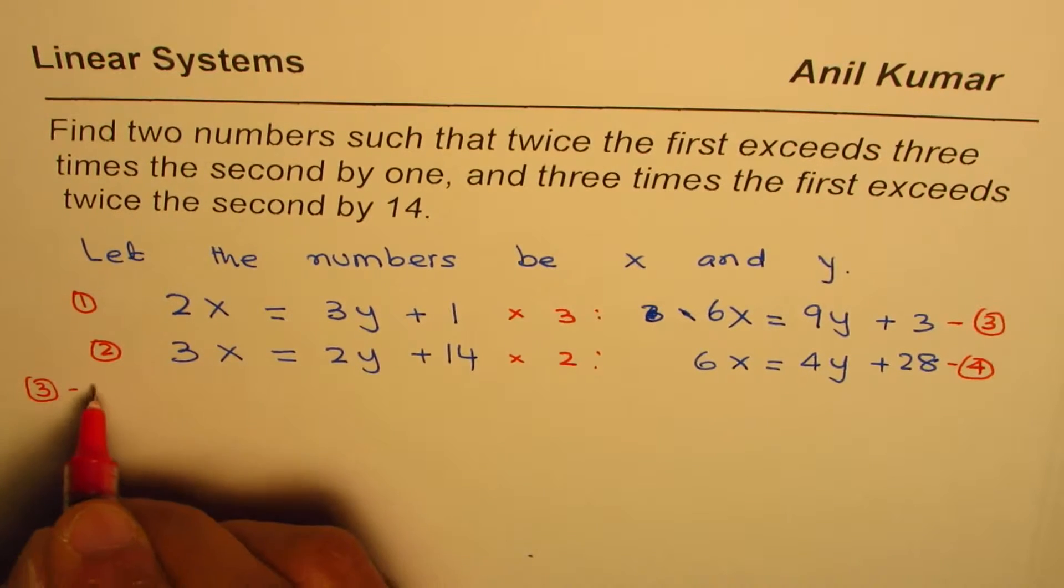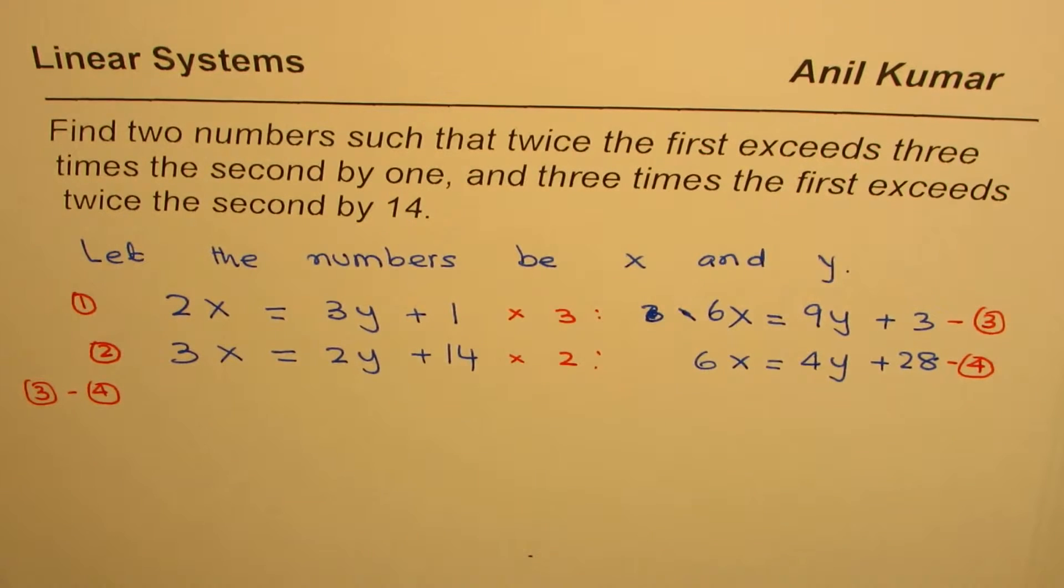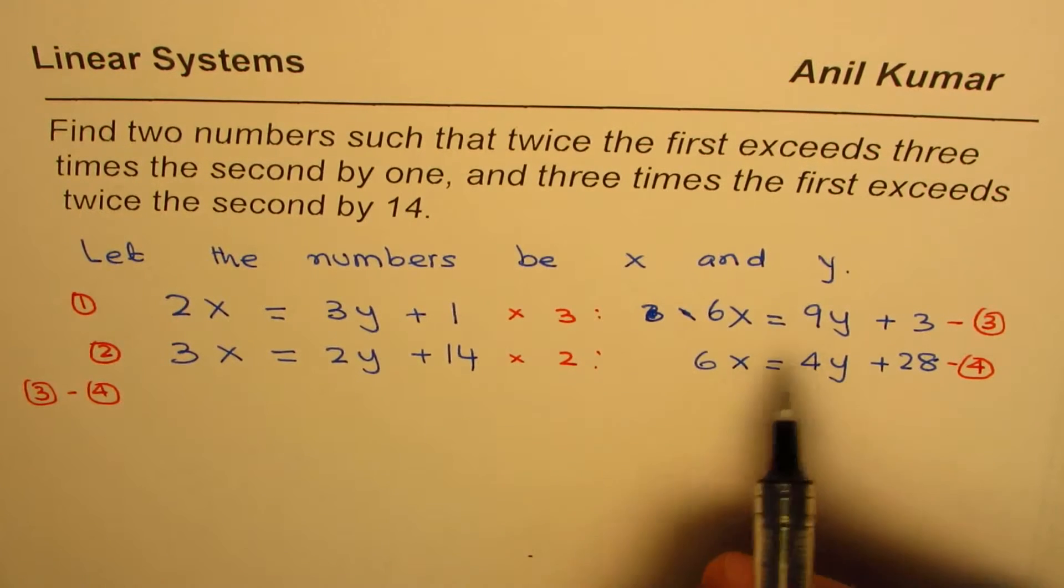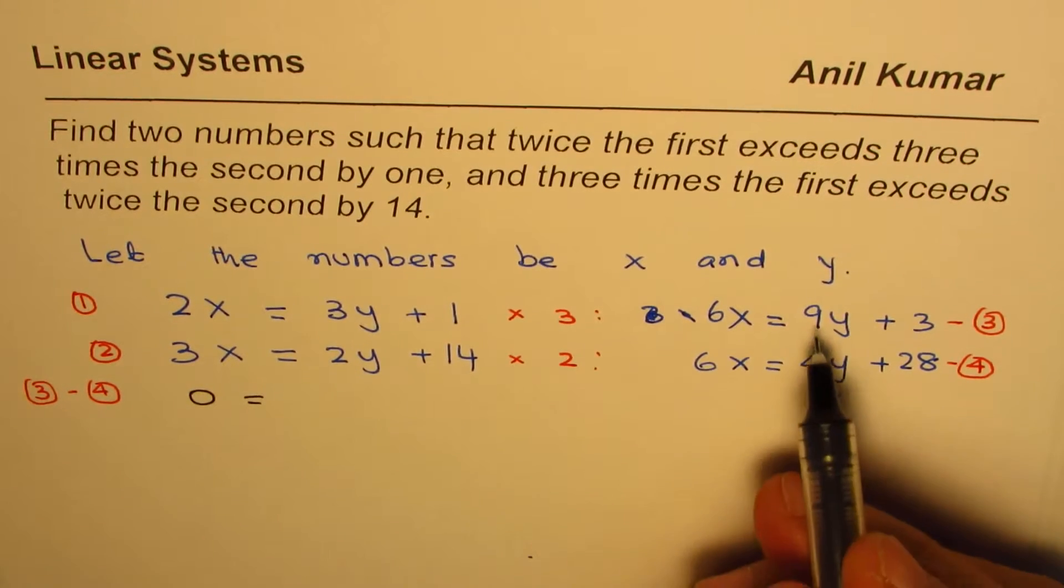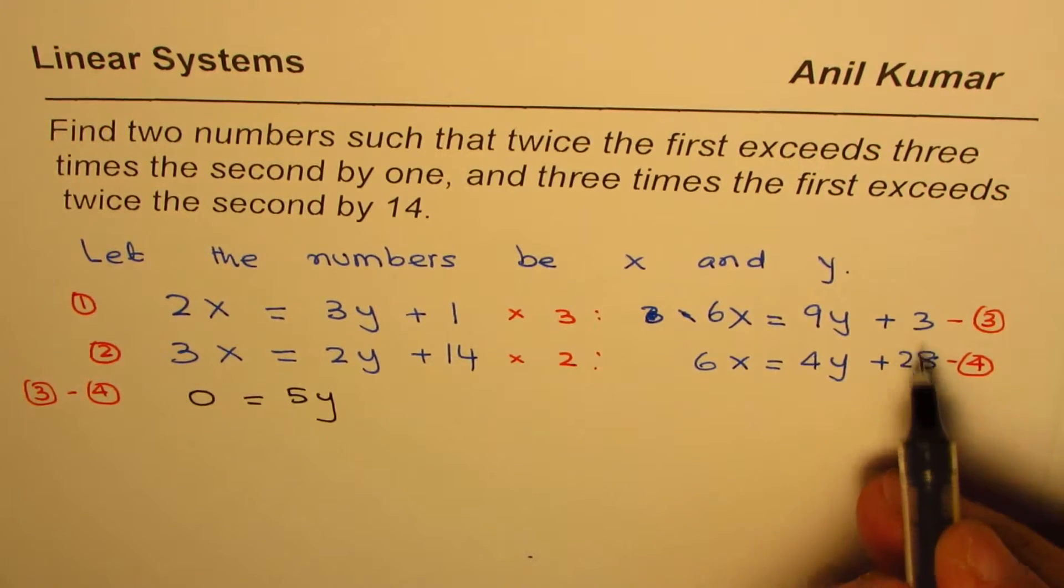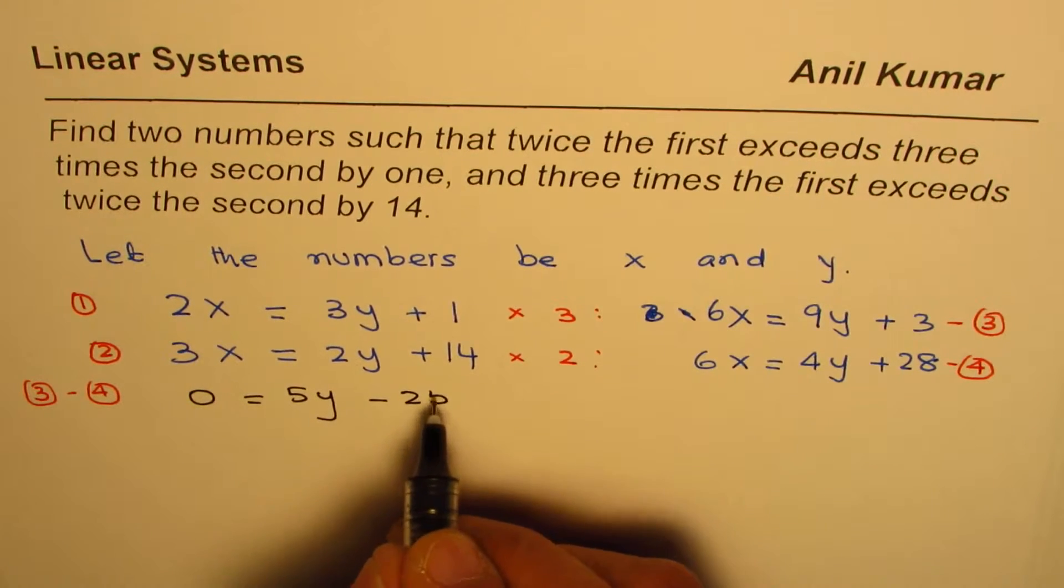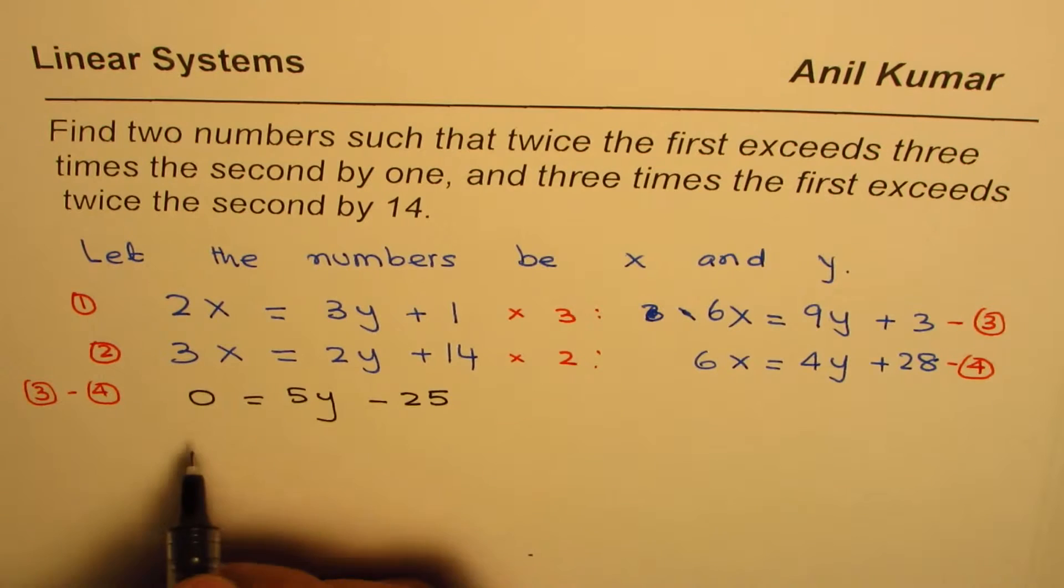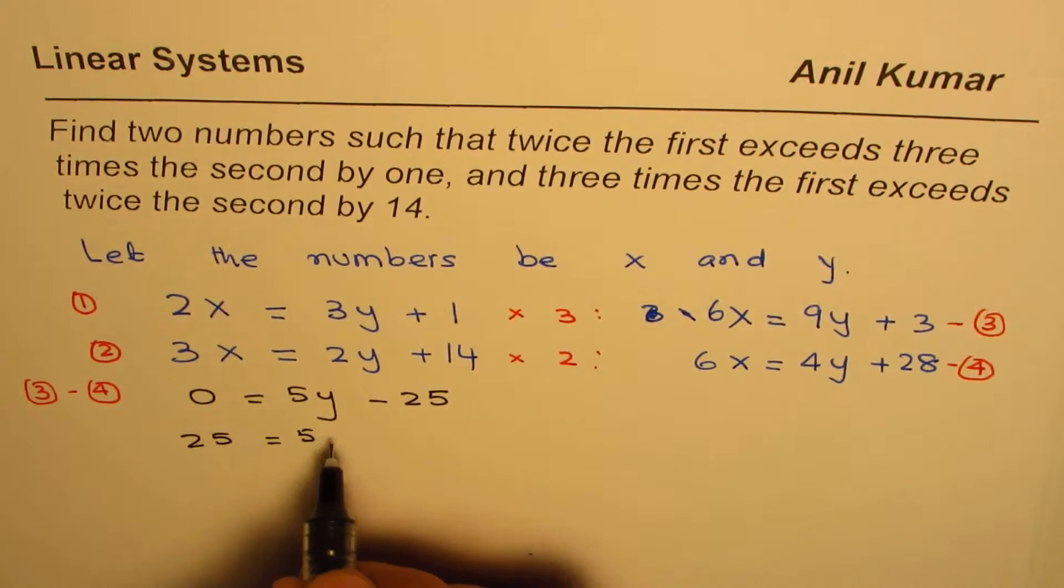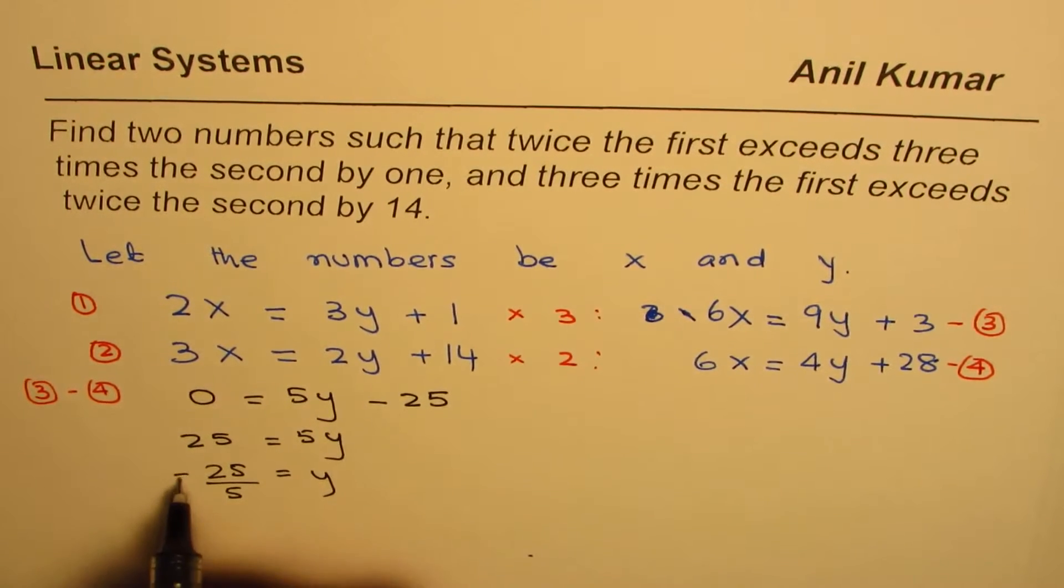We get 0 = 5y - 25. Rearranging: 25 = 5y, or 25 divided by 5 = y. That gives us y = 5 (5 times 5 is 25). Once you find the value of y, you can substitute it.